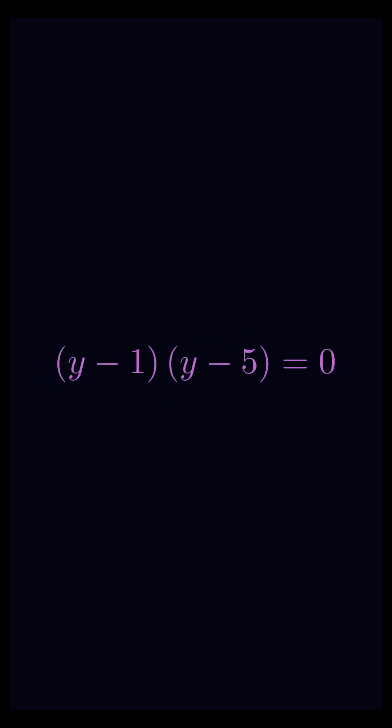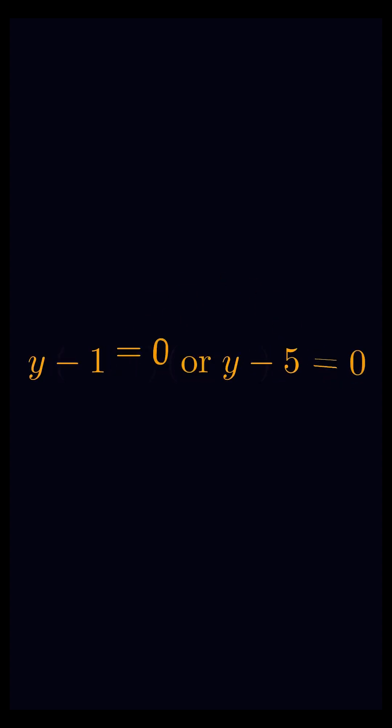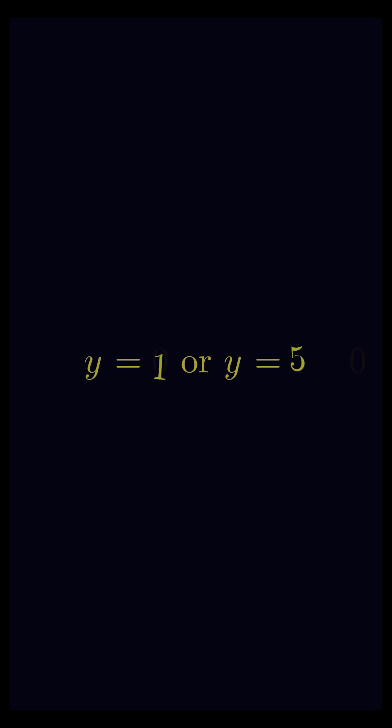So here we can write y minus 1 equals 0 or y minus 5 equals 0. We will shift 1 and 5 to the right side so that we will get y equals 1 or y equals 5.